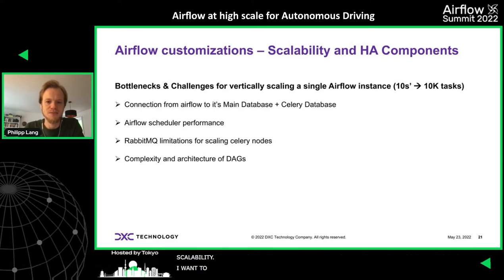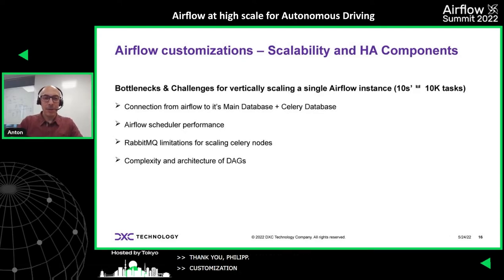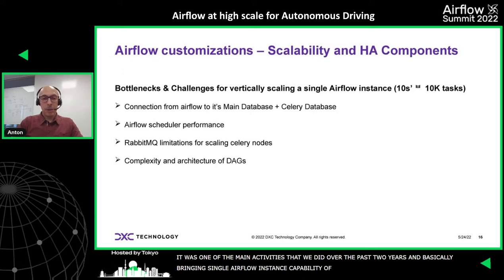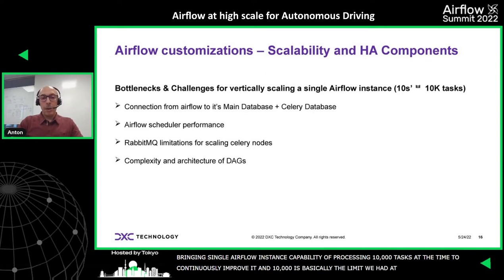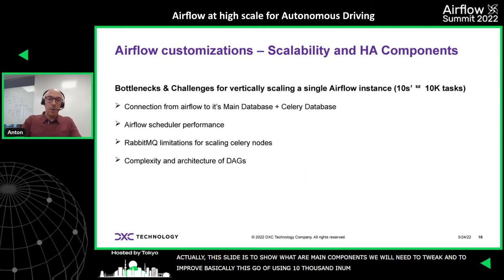Our next customization is around scalability and resiliency. This was one of the main activities over the past two years — bringing a single Airflow instance to the capability of processing 10,000 tasks at a time and continuously improving it. The 10,000 tasks is the current limit. The main components that needed tweaking were: the database connection, the Airflow scheduler performance, RabbitMQ, and the DAG architecture itself.